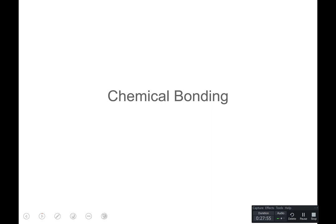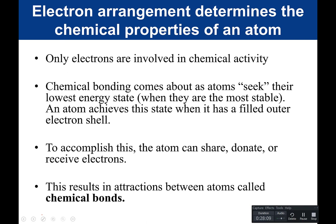Now we're going to look at chemical bonding. Electron arrangement determines the chemical property of an atom, and only electrons are involved in chemical activity. Chemical bonding comes about when atoms seek their lowest energy state — when they are most stable. An atom achieves this state when it has filled its outer electron shell. So atoms will form chemical bonds in order to fill their outer shell. This results in attraction between atoms, which we call a chemical bond.